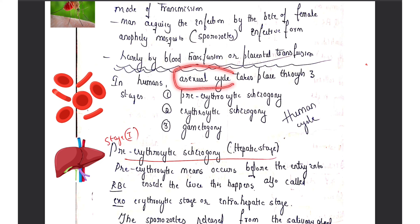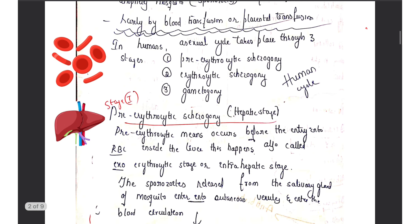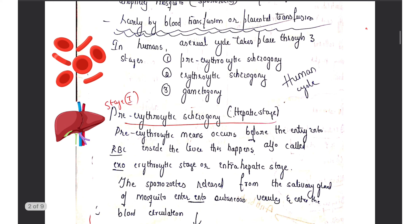What are the stages which occur in the human life cycle? Firstly, it is the pre-erythrocytic stage, that is pre-erythrocytic schizogony, then erythrocytic schizogony, and finally gametogony.